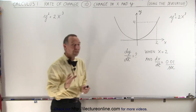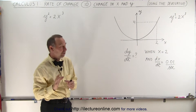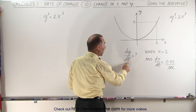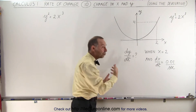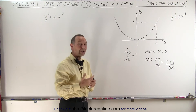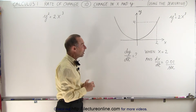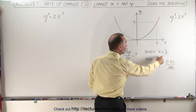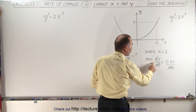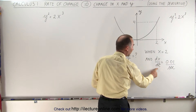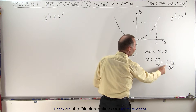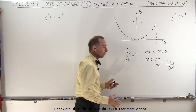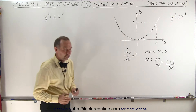What they're asking for is the change in y with respect to time — the rate of change of y with respect to time — when x is equal to 2, and x is changing with respect to time at a rate of 0.01 per second, whatever the units are.